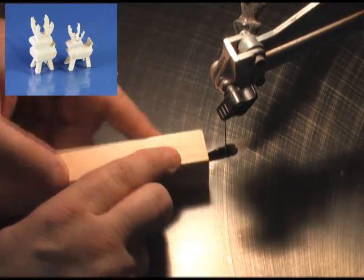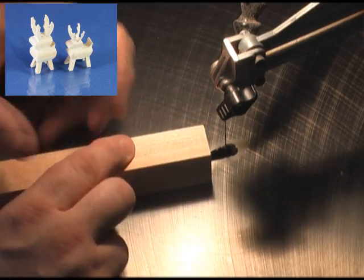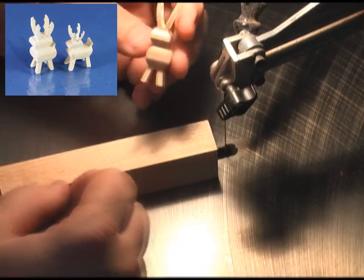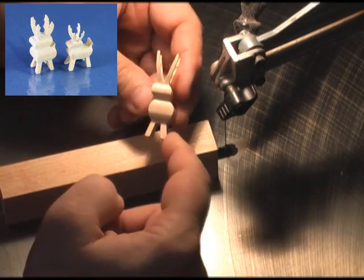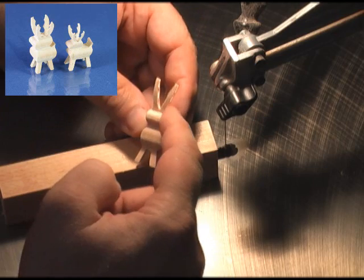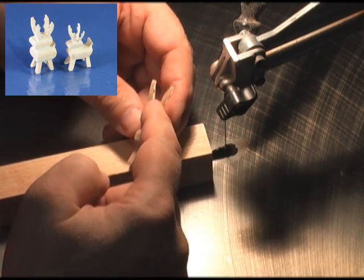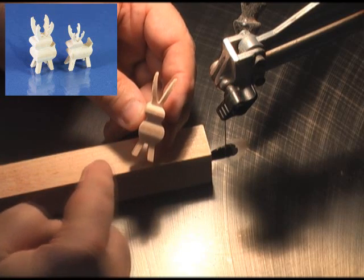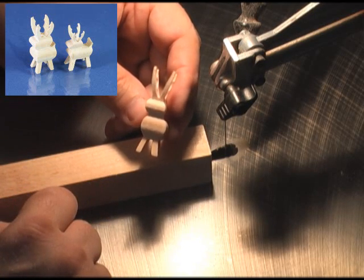We'll begin on the front side. What we're going to do is come in looking at it like this. We're going to come up this leg, make the body, make the head, make the left antler, the right antler, down the head, down the body, and down the outside of the leg. That will be our first cut.